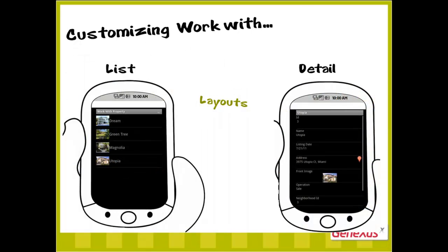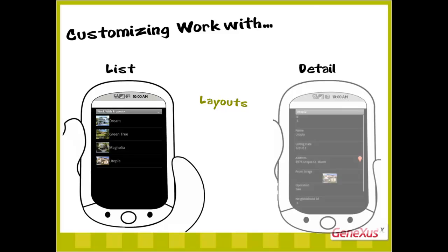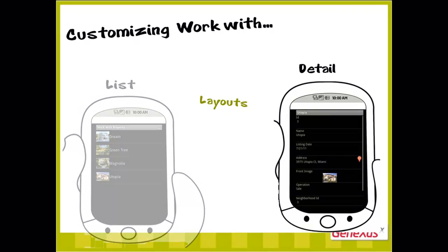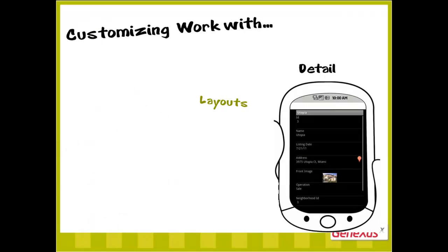We have just customized the layout of the list of real estate properties. We also want to customize that of the detailed information on a specific property. For this, we have the detail node with the nested section — the general section.